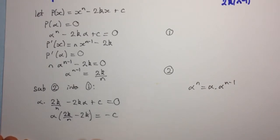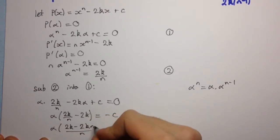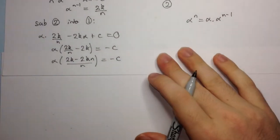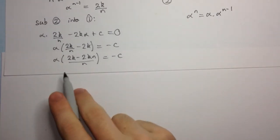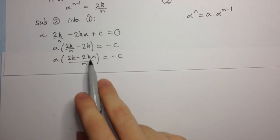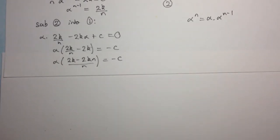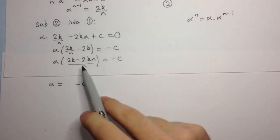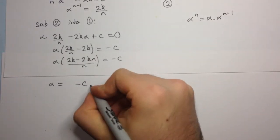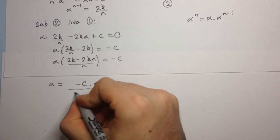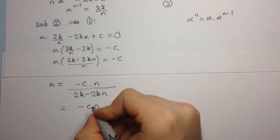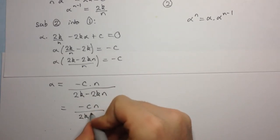Making a common denominator, we get alpha into 2k minus 2kn over n, which equals minus c. Dividing both sides by 2k minus 2kn over n — which is the same as multiplying by its reciprocal — we get alpha equals minus c times n over 2k minus 2kn. We can factor out 2k to get 2k into 1 minus n.